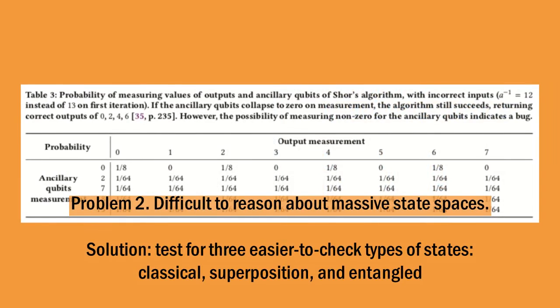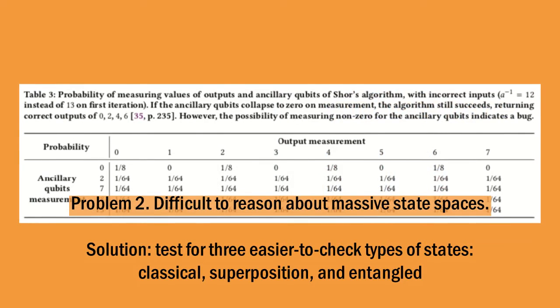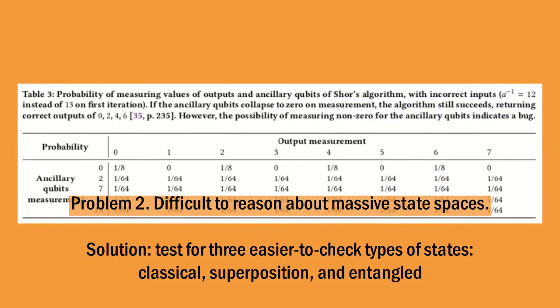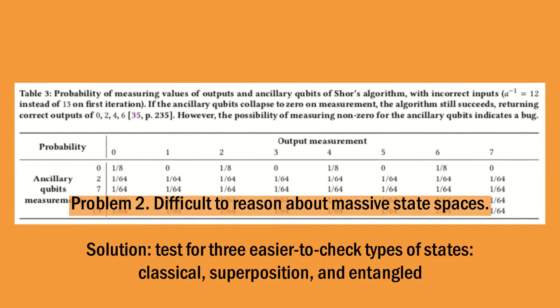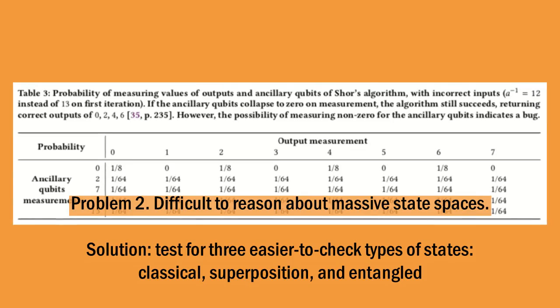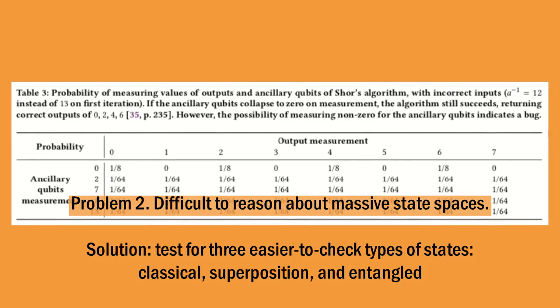The second problem is that it's difficult to reason about the massive state spaces that happen inside quantum programs. Our solution is to check for three easier-to-check types of states: classical, superposition, and entangled.